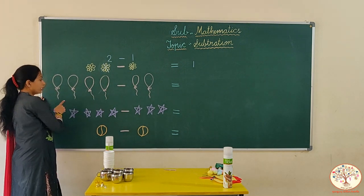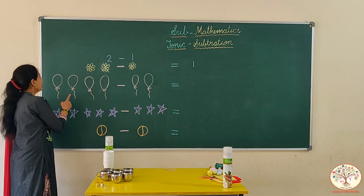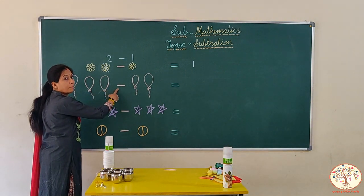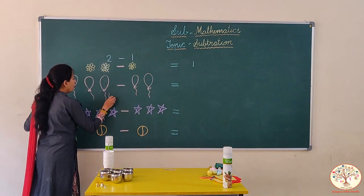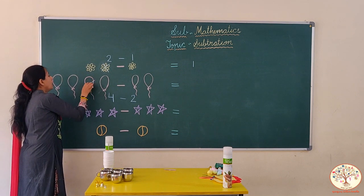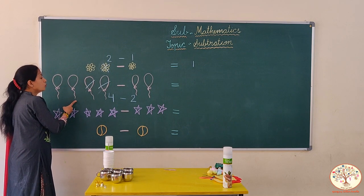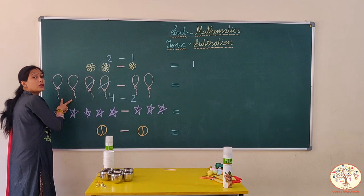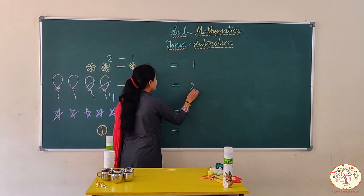Look at these. What are these? Balloons. Do you like balloons? Let's count them — one, two, three, four. Four balloons. This is the symbol of minus. Four balloons minus two balloons. Do balloons ko hata dena hai. Now we have one, two — two balloons. If we take away two balloons from four balloons, we are left with two balloons. Four minus two is equal to two.